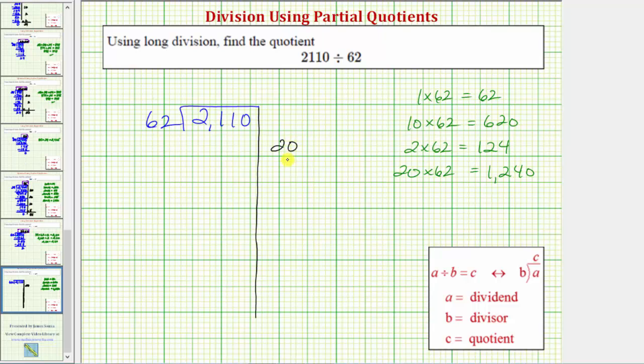So now we multiply it by the divisor. 20 times 62 we already know is 1,240, and now we subtract. By subtracting, what we're doing is removing 20 62's from 2110. So subtracting, we have a zero in the ones. Here we perform an exchange. 11 minus four is seven. Another exchange here, 10 minus two is eight. And of course, one minus one is zero. So the difference is 870.